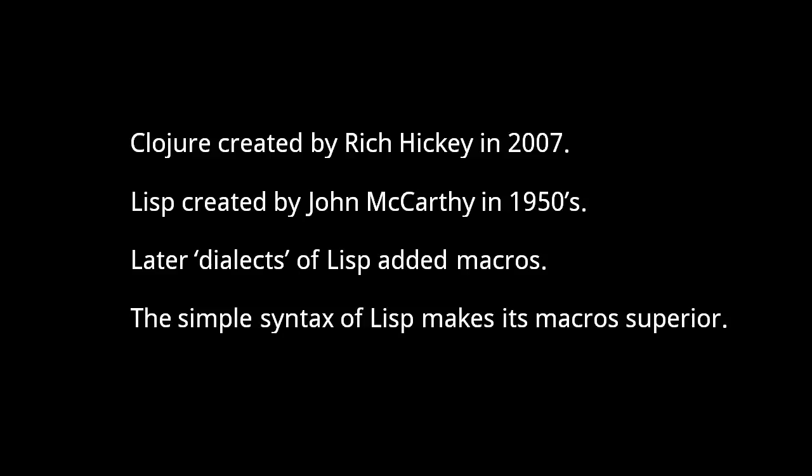The original Lisp language wasn't used for very long, but many imitators took its place. Sometime in the late 60s, some of these dialects of Lisp incorporated macros. A macro is a function that takes source code as input and returns source code as output. Before compilation, the macro invocations in your source code would get replaced by the source code which they return. With macros, we can remove boilerplate repetition in our code. Now, some non-Lisp languages have their own version of macros, but none have the power of Lisp macros.